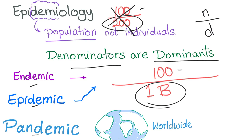Epidemic involves a larger population, usually more than one country, and there is a sudden spike or increase. For example, an epidemic of influenza in North America — a continent — would be called an influenza epidemic. Pandemic is different: it's worldwide. If Ebola spread to every single country on Earth, then it would be a pandemic — and of course, it's a disaster.